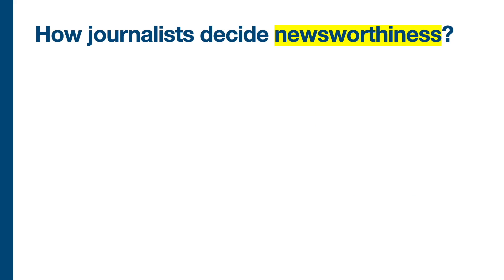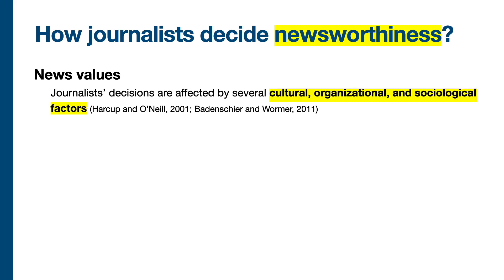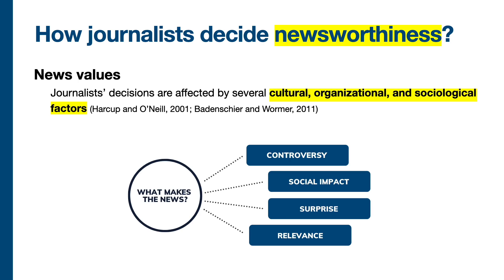So how is it that journalists decide newsworthiness? How do they vet a story? There is a specific set of factors, known as news values, that impact journalists' decisions. These are cultural, organizational, and sociological factors. For instance, these could be related to the controversy, social impact, the surprise, or the relevance of a given story. This is a non-exhaustive list, and often the news values that journalists use are highly contextual and highly variable.